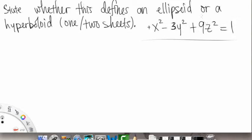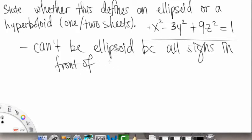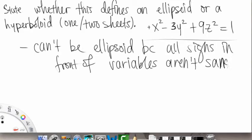So first of all, this cannot be an ellipsoid, can't be ellipsoid, because all of the signs in front of our variables here, they're not all the same. Because all signs in front of variables aren't the same. So definitely not an ellipsoid.